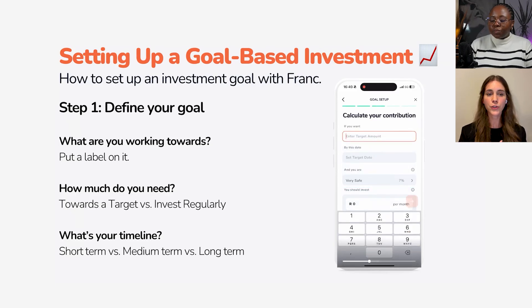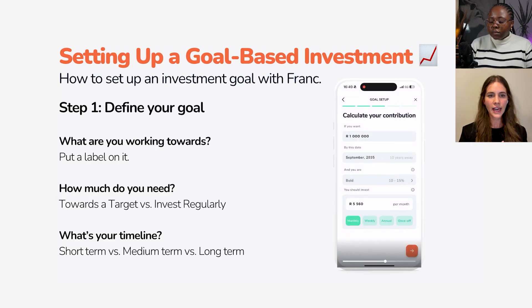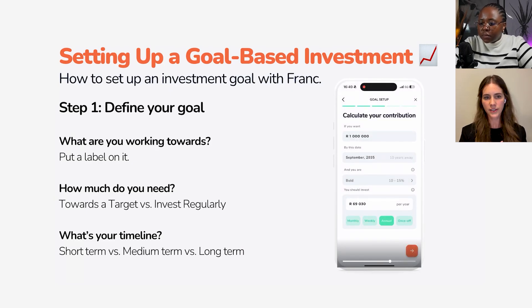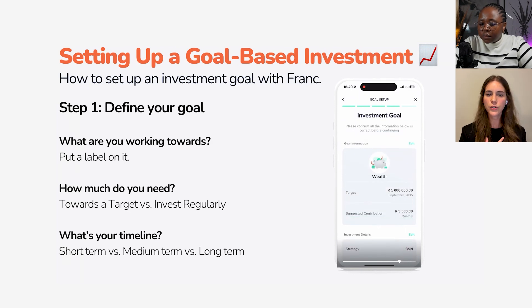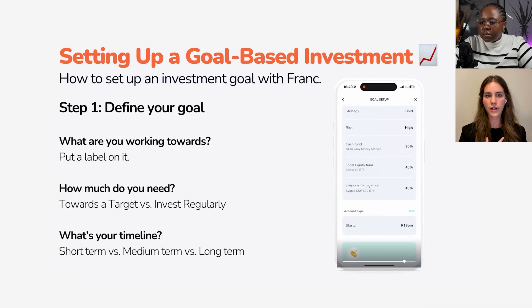If we're going towards a target, we're putting in a million rand as our target. We're going to say in 10 years' time, so 2035 for example. And it's going to tell us what the recommended strategy is — you'll see that it says 'Bold' there. You can toggle between monthly, weekly, annually, or once-off. Going with monthly, that means we'd have to deposit 5,000 rand.